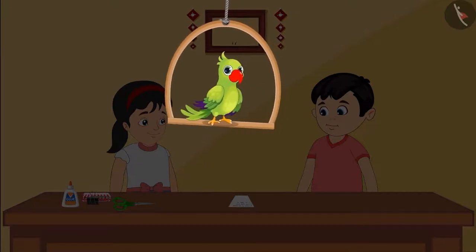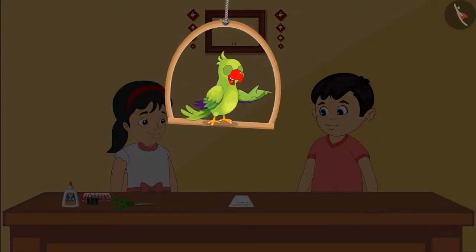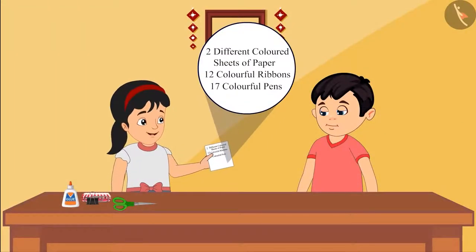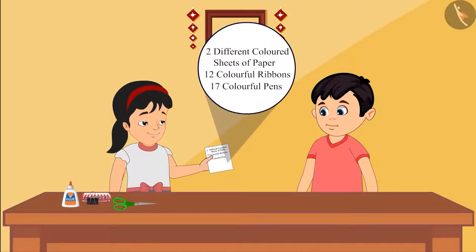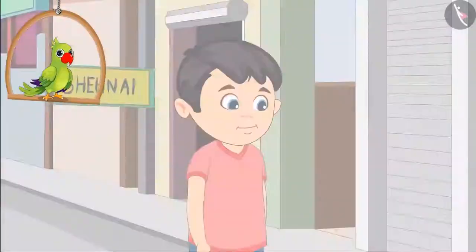Today is Pinky and Chotu's parents' wedding anniversary, and that's why Pinky and Chotu decide to make a card for their parents. Pinky needs some objects to make the card and she makes a list of these objects. She asks Chotu to quickly go and get all these objects from the nearby shop, while she starts making the card.